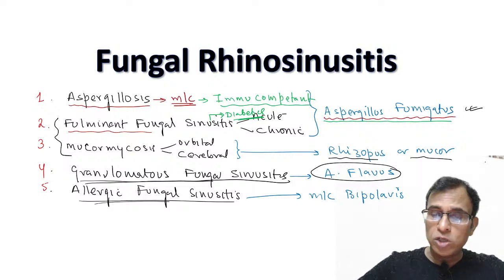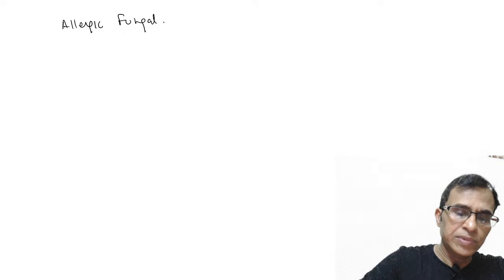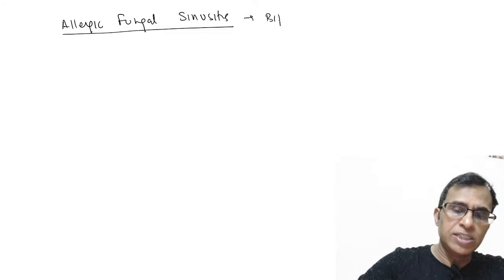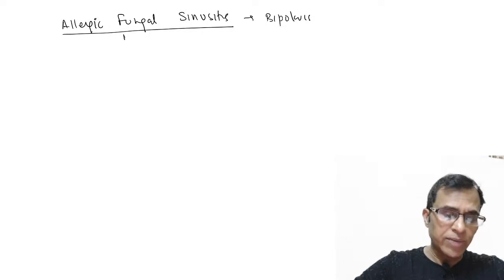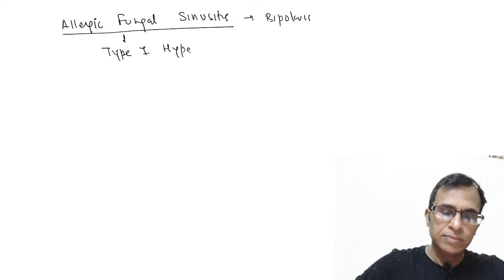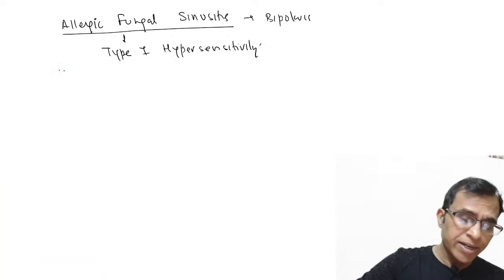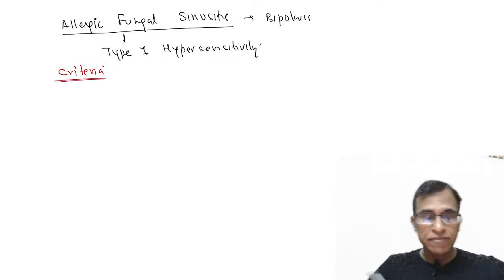The last but most important fungal condition is allergic fungal sinusitis, caused by Bipolaris as the main pathogen. The patient is allergic to the fungus, which is why this is a type 1 hypersensitivity reaction. What is most important here is that there is a specific criteria for diagnosis — five criteria — and this is what exams ask about.